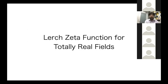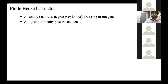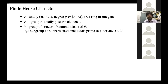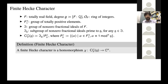First, I want to talk about the Lerch zeta function for totally real fields. In the classical case the Lerch zeta function was very important, but in the totally real field case, it's not clear what the Lerch zeta function should be. So we want to investigate finite Hecke characters for totally real fields. Let F be a totally real field with degree g and ring of integers O_F. We denote by F_+^× the group of totally positive elements in F. We let I be the group of non-zero fractional ideals of F and I_G those which are prime to G. We denote by CL_F^+ the narrow class group of F with conductor G.